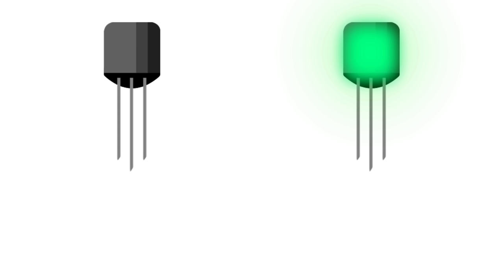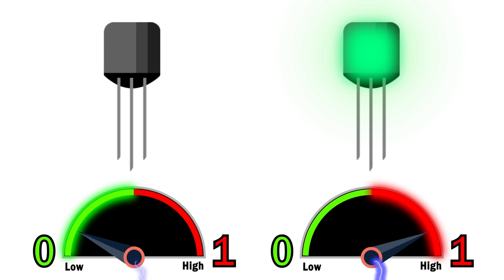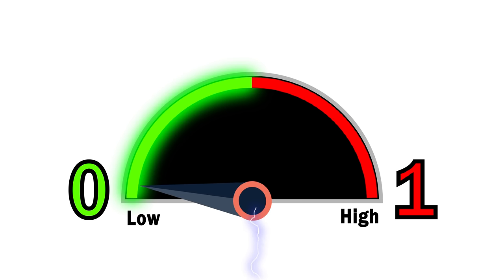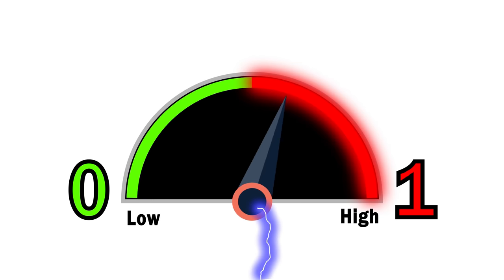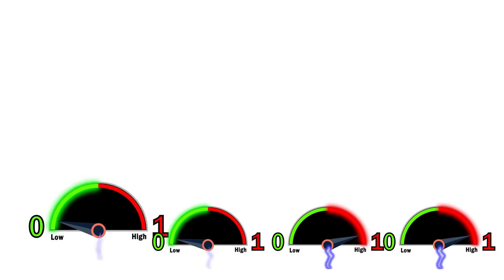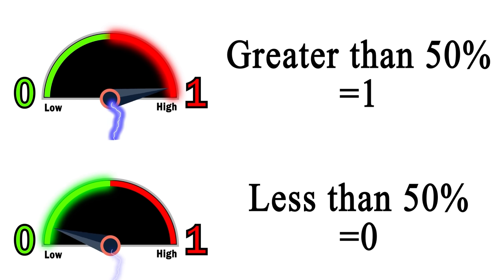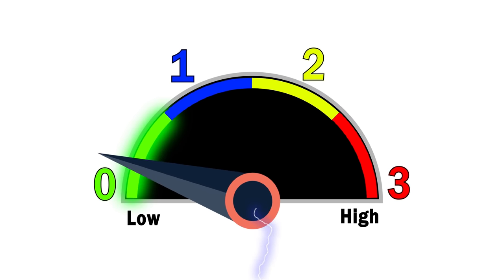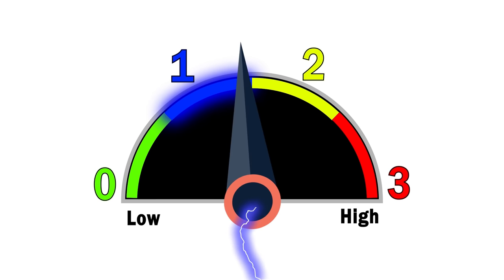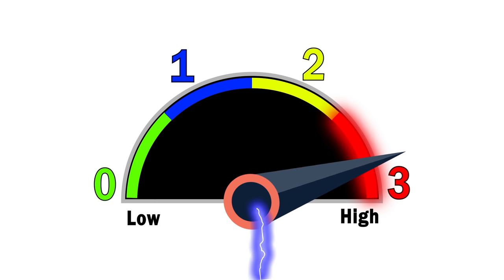When we refer to a transistor being on or off, what we really mean is that it's either a high charge or low charge, respectively. An on cell has a very high amount of electricity stored in it, while an off cell has a low amount. These states determine whether a single cell represents a zero or a one in binary code. So if a computer can read and write data to these cells by sensing or storing different amounts of electrical charge, why can't we get more specific? What if, instead of less than 50% charge being a zero and above 50% charge being a one, we divided it into four segments — 0 to 25% being a zero, 25 to 50% a one, 50 to 75% a two, and 75 to 100% a three?